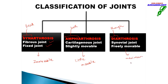These three types of joints — synarthrosis, amphiarthrosis, and diarthrosis — are present in different areas of the body. Remember: synarthrosis is fixed, amphiarthrosis is slightly movable, and diarthrosis is freely movable — like when you do bowling and rotate your shoulder 360 degrees, that is because of diarthrosis.